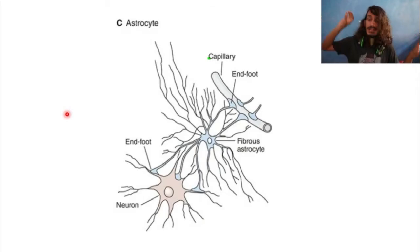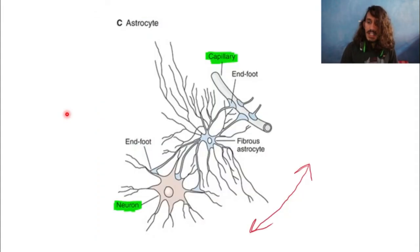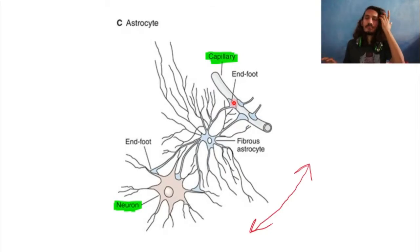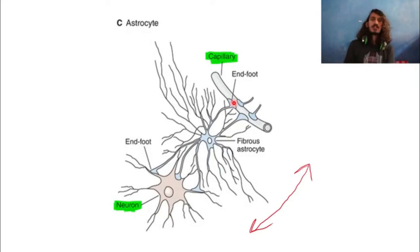Looking at the astrocyte diagram, you can see how it bridges a capillary and a neuron, using end-feet — pad-like structures — to attach to both sides. This bridging role is fundamental to the blood-brain barrier, which will be explained in more detail in another lecture.